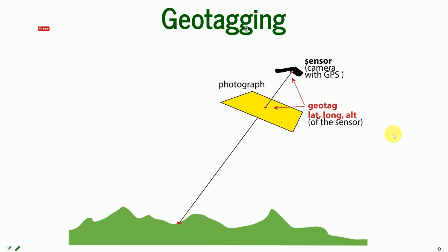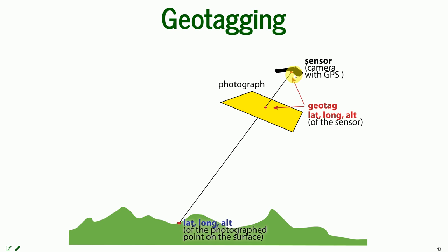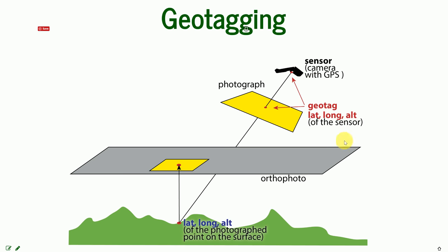Where is the problem in that? The problem is that the latitude, longitude, and altitude of the point on the ground is not the same as the latitude, longitude, and altitude of the sensor. So if we would like to make an orthophoto or change it to orthogonal projection, what would be the accurate position of this point — would it be the latitude and longitude of the geotag, or the one of the actual point?